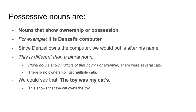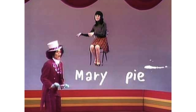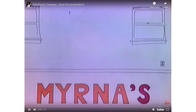For example, it is Denzel's computer — since Denzel owns the computer, we put apostrophe S after his name. If we wanted to change a sentence, we could say the toy was my cat's. The apostrophe S shows that the cat owns the toy — it is the cat's toy. Okay, let's watch this video.